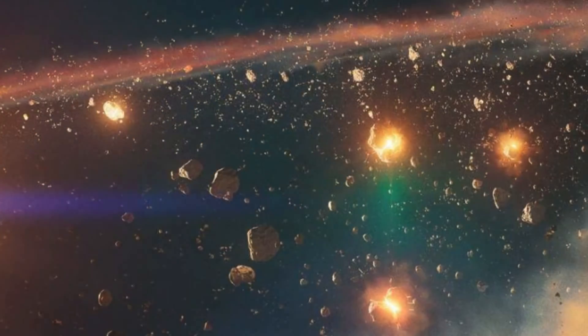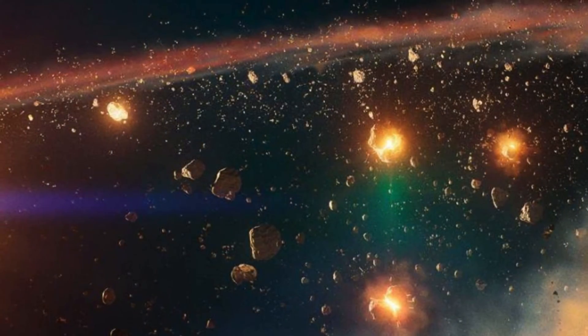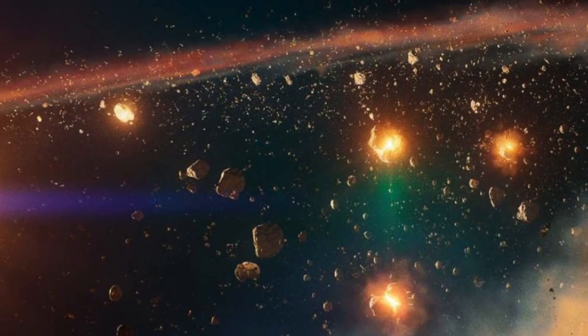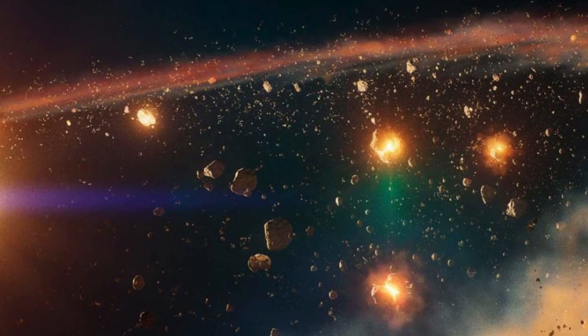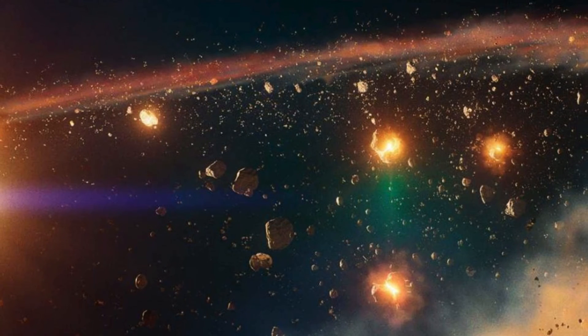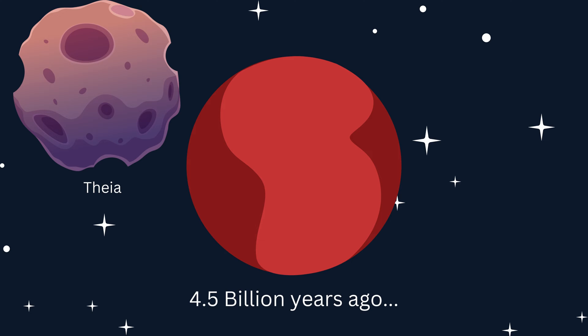To understand the reason behind the Earth's tilt, we need to take a trip back — way back in time — over 4.5 billion years to the very beginning of our solar system. When the Earth first formed, it was a chaotic and violent place, with countless celestial bodies colliding and merging.